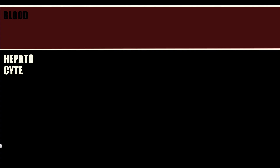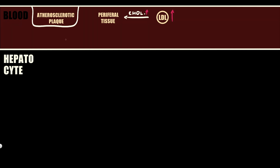Let's explain how it works. Low-density lipoproteins carry hepatic cholesterol to the peripheral tissues. If the LDL cholesterol level increases, it can accumulate in the arterial wall with formation of atherosclerotic plaques. Normally, the liver expresses low-density lipoprotein receptors for uptaking LDL from the blood.